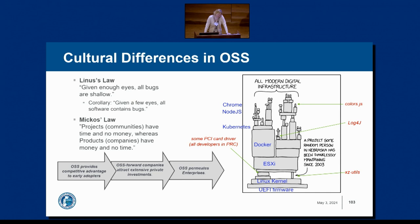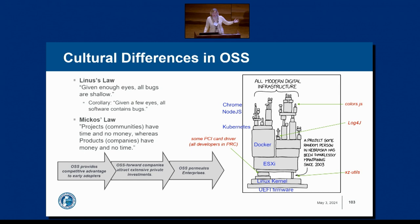Those who develop and contribute to open source have the time but not the funding or capital to sustain the rate of production and quality. On the flip side, companies in the private sector have the funding and capital but not the time — and there's a vicious product release cycle. So knowing that, what is government's role when OSS is prolific and value is derived from it? What can be done to ensure sustainable, safe, and secure use of OSS?